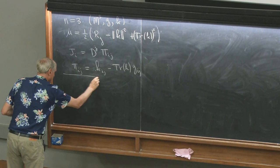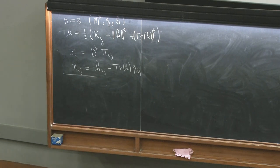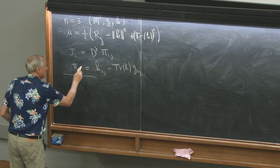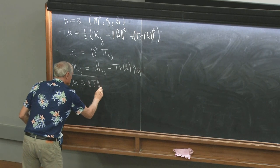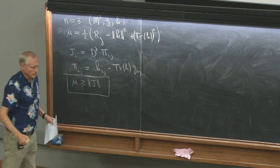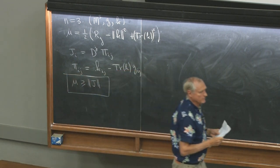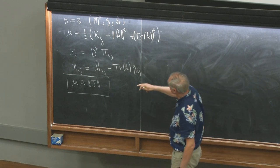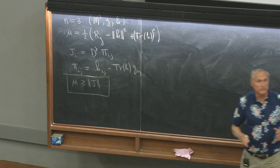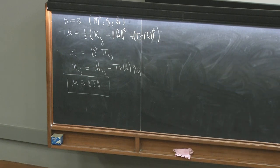The dominant energy condition, which reduces to non-negative scalar curvature in the case when k is zero, is more generally the condition that μ is greater than or equal to the norm of j. So we want to look at three-dimensional manifolds which have a Riemannian metric and a symmetric zero-two tensor k satisfying this inequality, where μ and j are given above. From a geometric point of view it looks sort of strange, but of course these equations arose from the Einstein equation, so that gives them some nice structure.